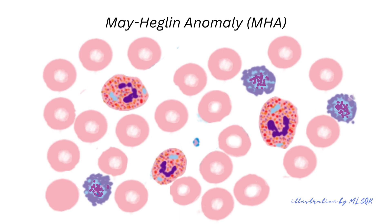The May-Hegglin anomaly is an autosomal dominant disorder associated with thrombocytopenia. The appearance in the peripheral blood smear shows irregular blue cytoplasmic granules, and these resemble Döhle bodies. Also note the giant platelets.